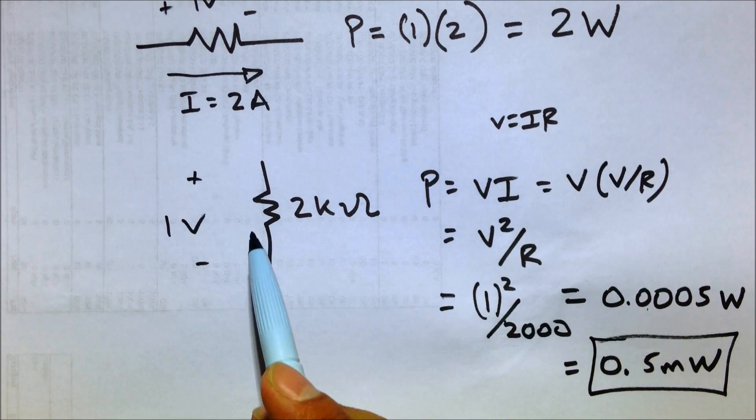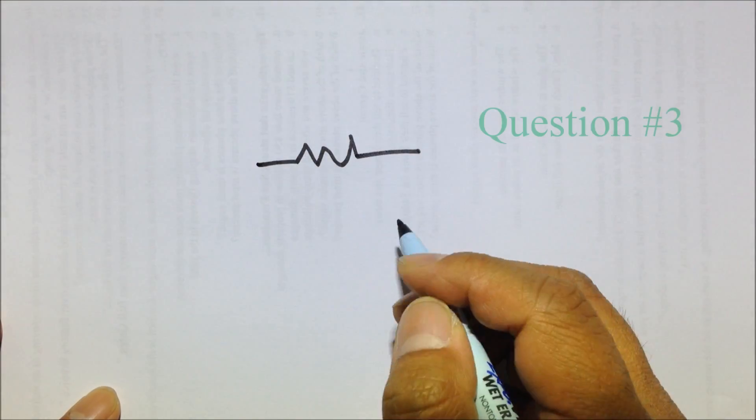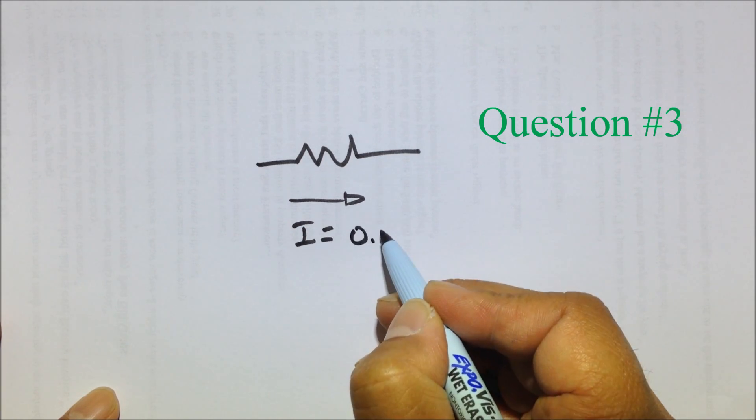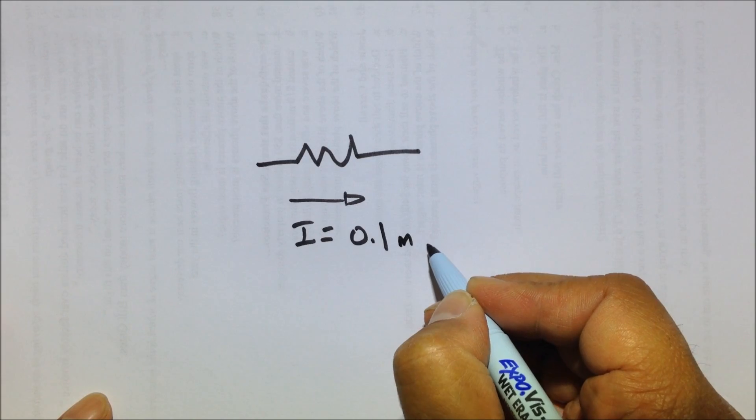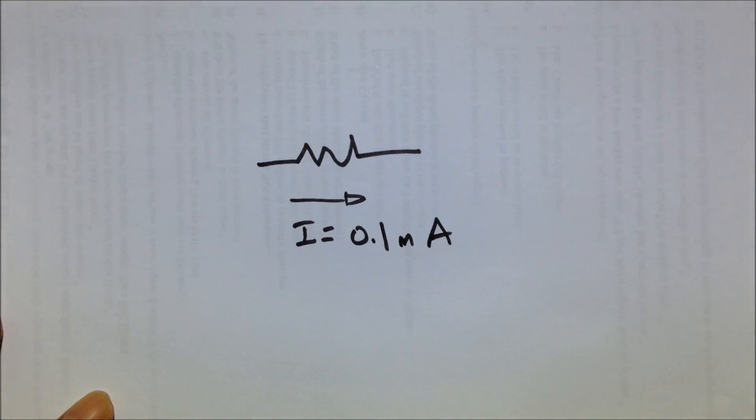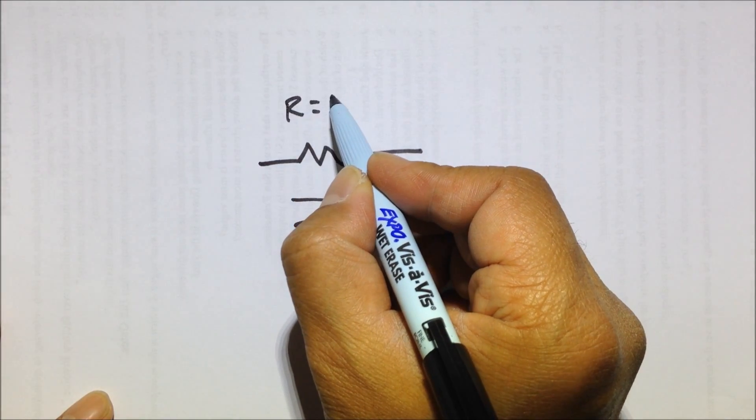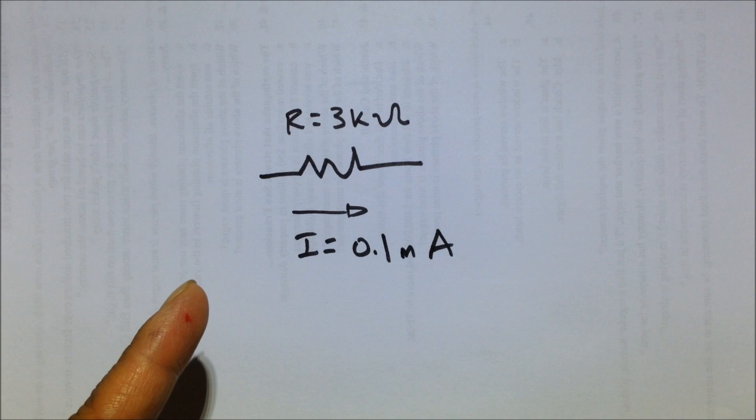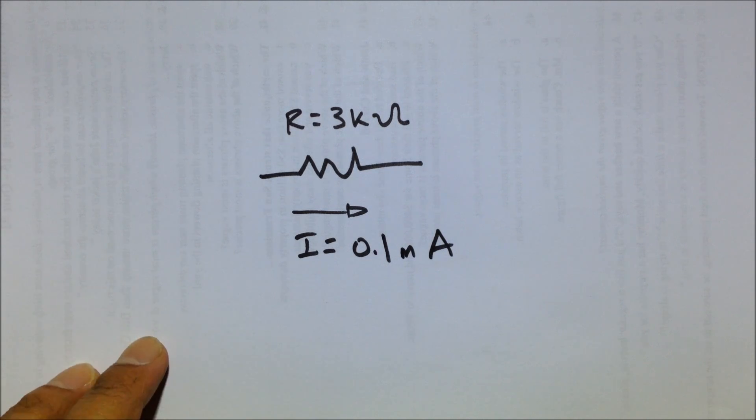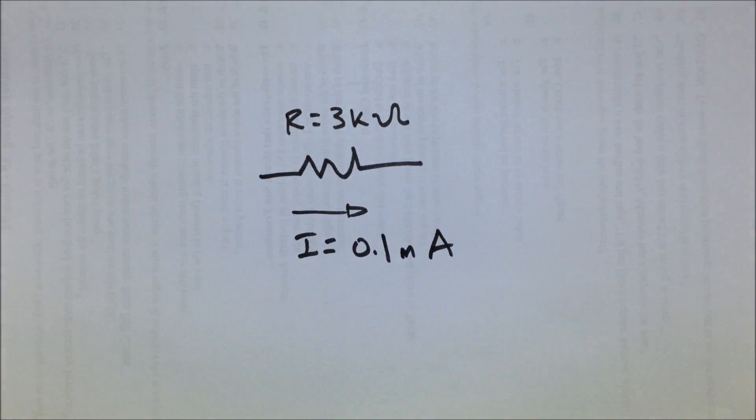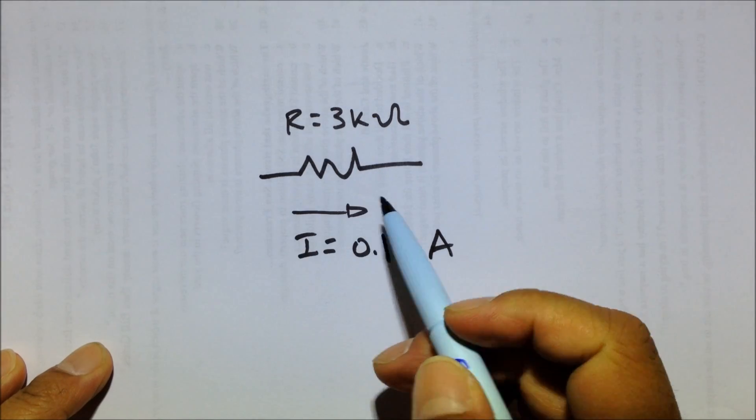Let's take a look at a resistor again. And let's say we know the current this time. We know that the current going through that resistor is 0.1 milliamp. And this time we don't know the voltage across the resistor. Instead, let's say we know the resistance equals 3 kohms. And we want to figure out how much power is consumed by this resistor.